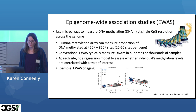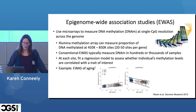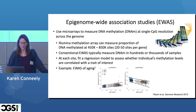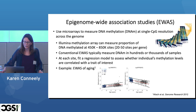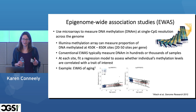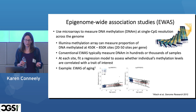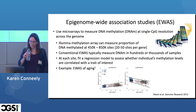A little bit about epigenome-wide association studies: we use microarrays to measure DNA methylation at single CpGs across the genome. Illumina has been producing methylation arrays — the two most recent can measure the proportion of DNA methylated at either almost half a million or almost a million sites. We're using the second most recent one because these samples were collected several years ago. Unlike GWAS where conventional studies now look at hundreds of thousands of samples, conventional EWAS are typically measuring DNA methylation in hundreds or thousands of samples, though TopMed is collecting DNA methylation so they'll be larger soon.